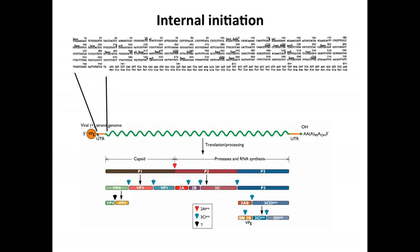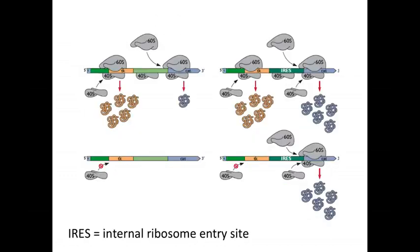So at the time, the dogma was ribosomes bind cap at the 5' end. They scan to the first AUG. So this viral RNA violated that idea. So how did this work? So the idea arose that perhaps the ribosomes can bind internally. Maybe they don't scan. So an experiment was done to address that possibility.